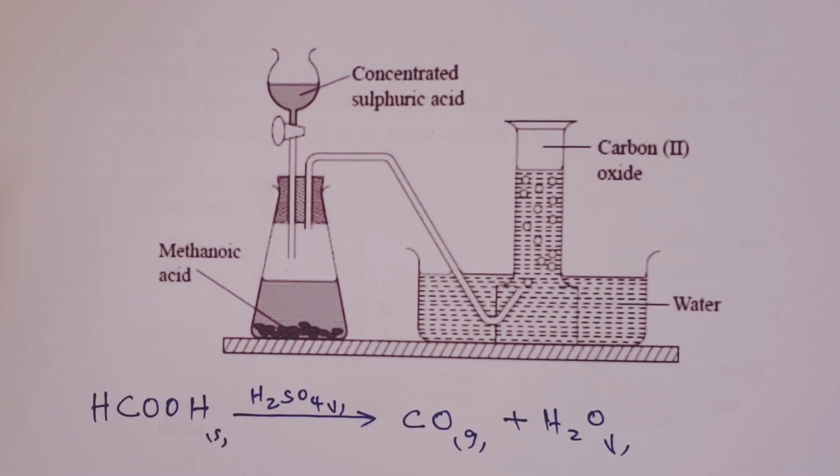If in any case we need a dry sample then we are supposed to pass the gas through concentrated sulfuric (VI) acid from this end and then we shall collect the dry sample by upward delivery. We use upward delivery because carbon (II) oxide is slightly lighter than air.